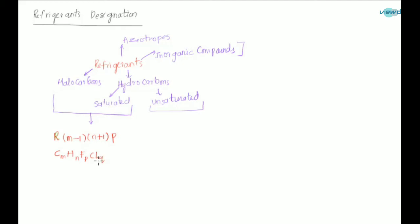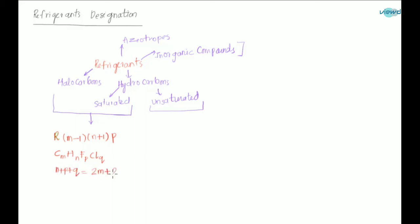So if carbon has M number of atoms, hydrogen has N, fluorine has P, and chlorine has Q. The designation format is R (M-1)(N+1)(P), and the relationship between all atoms is: N plus P plus Q equals 2M plus 2.